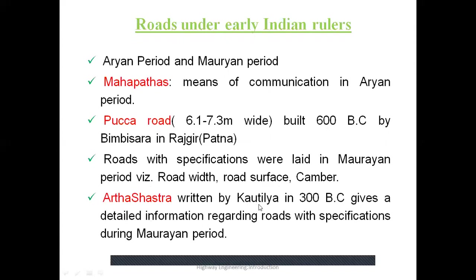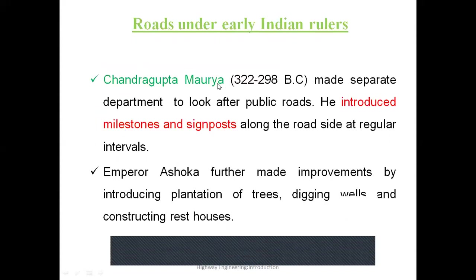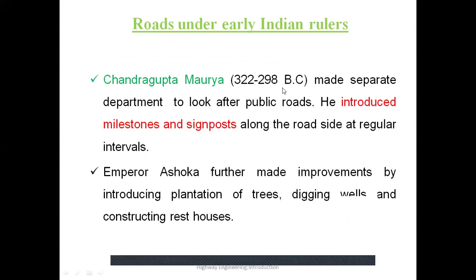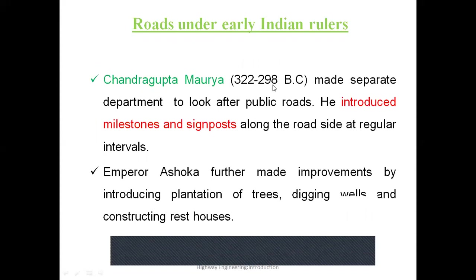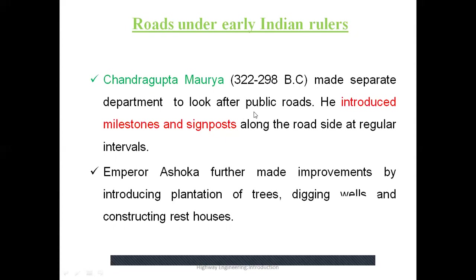Kautilya was a learned man. This Arthashastra was written in 300 BC and gives detailed information regarding roads with specifications during that time. Moreover, in the Mauryan dynasty, Chandragupta Maurya — during the period 322 to 290 BC — made a separate department to look after the public roads. So improvement was coming step by step.